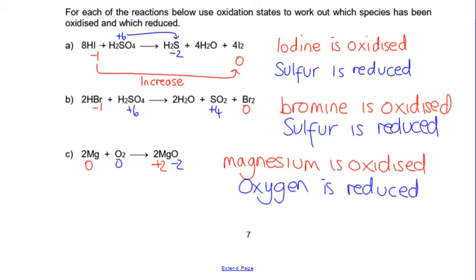Now the sulfurs are going from plus 6 down to minus 2. They're gaining 8 electrons and that is actually why there are 8 HI. So there are 8 I's for every S because every S wants to gain 8, but every I has only got 1 to lose. And so we have to balance that out. This is something that chemists will use to help them balance equations if they can spot it.